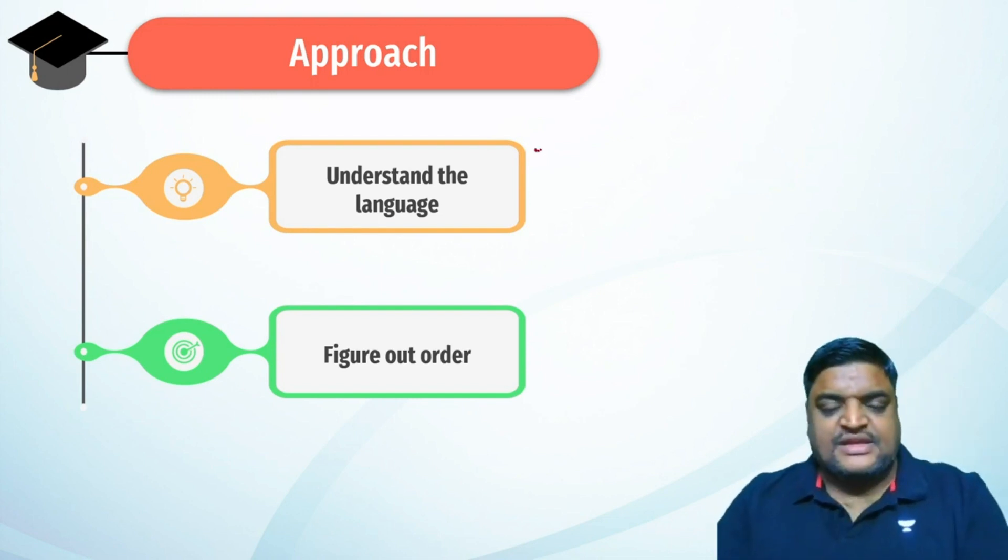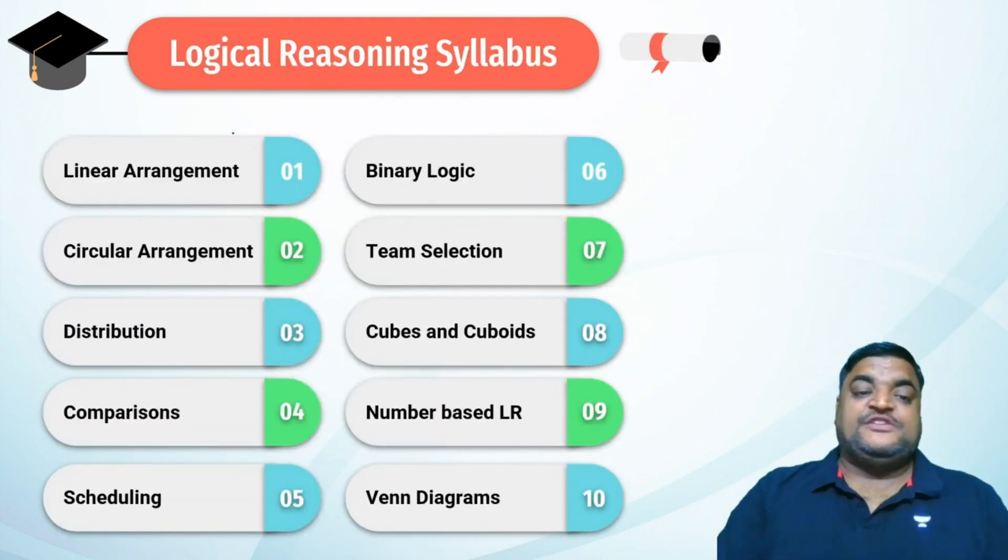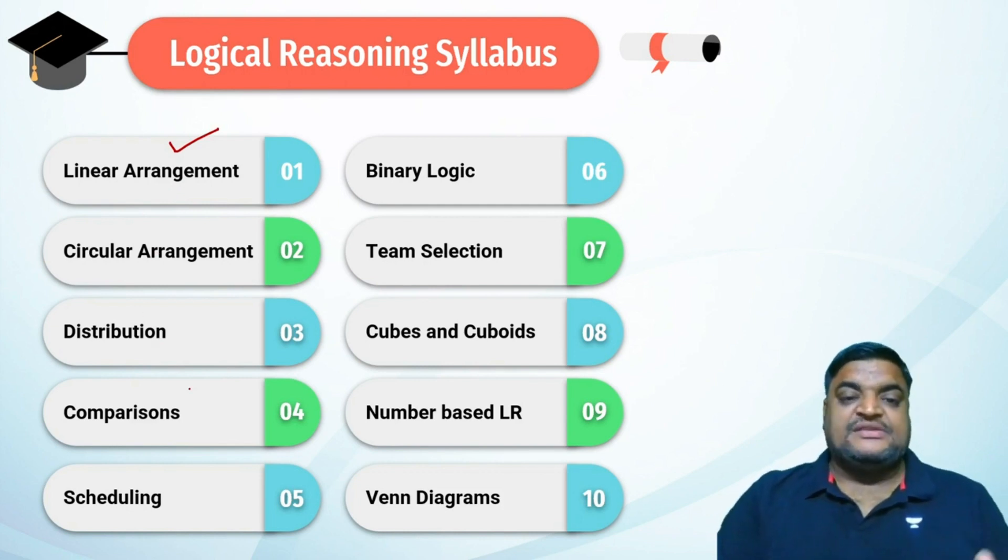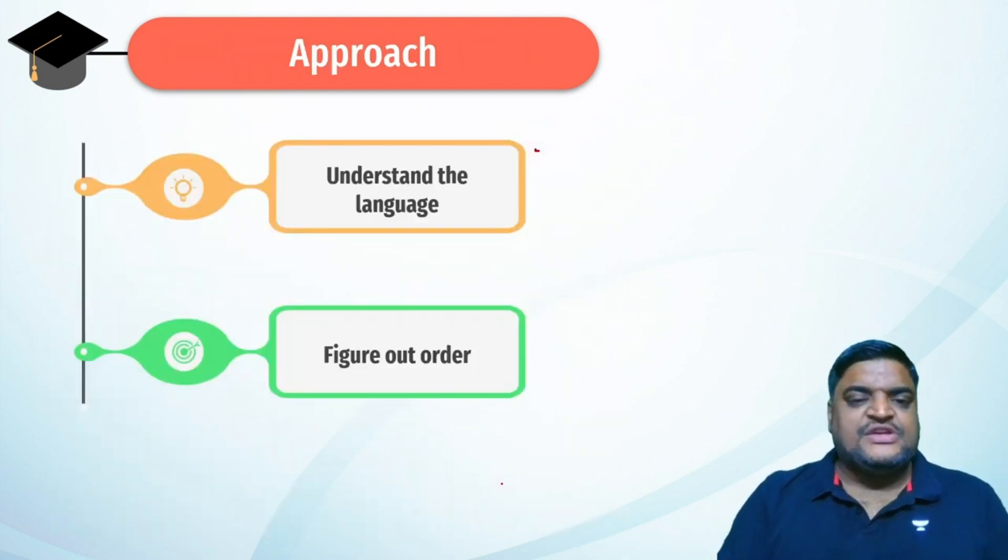If you figure out the correct order of the clues and understand the language, you got it. That's the only thing you need to master in logical reasoning. All of these topics have their specific set of languages you need to understand. You need to cover the basics first - watch the theory and practice some real basic questions to get hold of this language and the correct order of the clues.